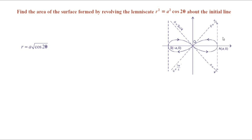The second case: cosine 2 theta is non-negative for 2 theta lying between 3π/2 and 5π/2, which gives theta lying between 3π/4 and 5π/4. From this, one can clearly observe that the curve is always symmetric about the initial line.